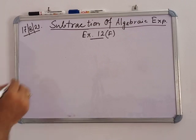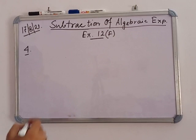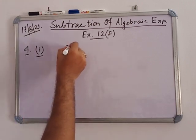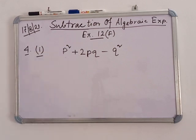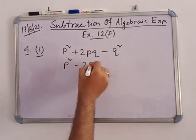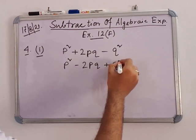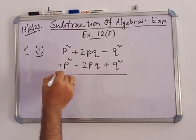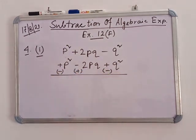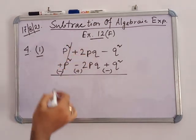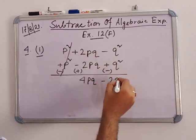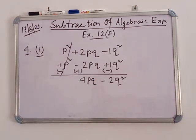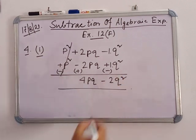In number 4: subtract p squared minus 2p cubed plus q squared from p squared plus 2p cubed minus q squared. The p squared terms cancel. Plus 2p cubed and plus 2p cubed give 4p cubed. Minus q squared and minus q squared give minus 2q squared. So the answer is 4p cubed minus 2q squared.